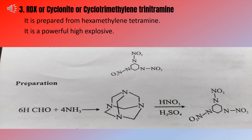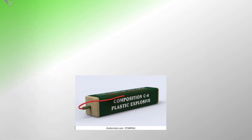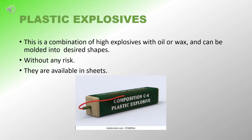RDX is prepared from hexamethylenetetramine and is a powerful high explosive. Binary explosives consist of a mixture of TNT with other explosives. They are more convenient to make and superior to single compound explosives in certain applications. Generally, binary explosive mixtures are heated to liquid state and poured into containers and allowed to solidify. Plastic explosives are a combination of high explosives with oil or wax and can be molded into desired shapes without any risk. They are available in sheets.